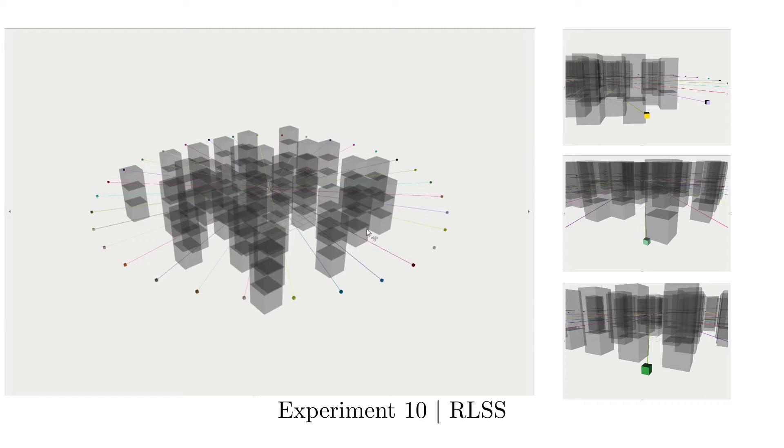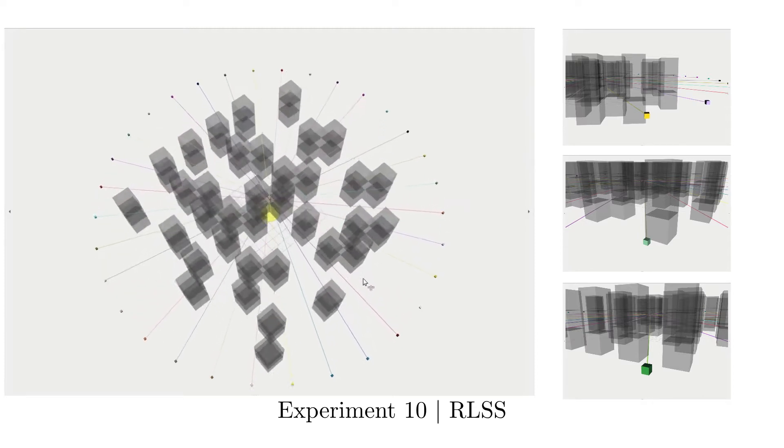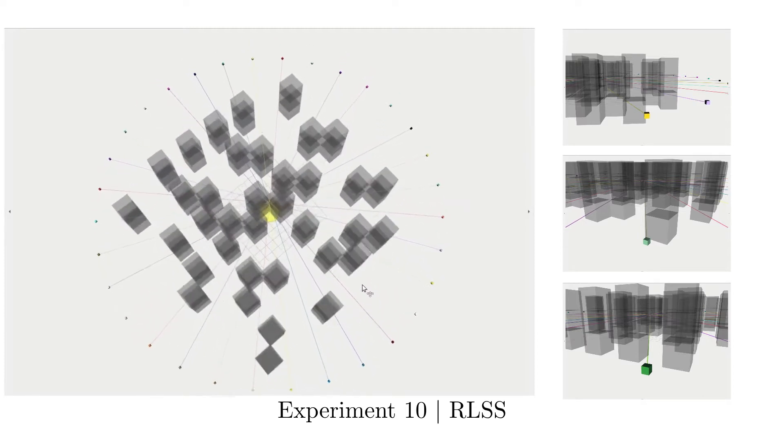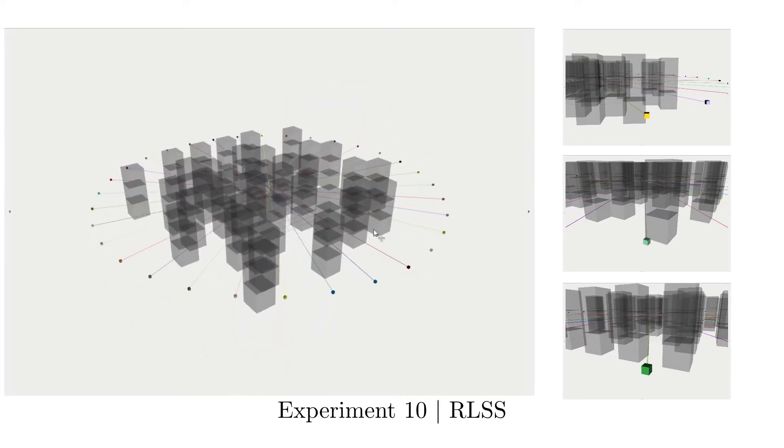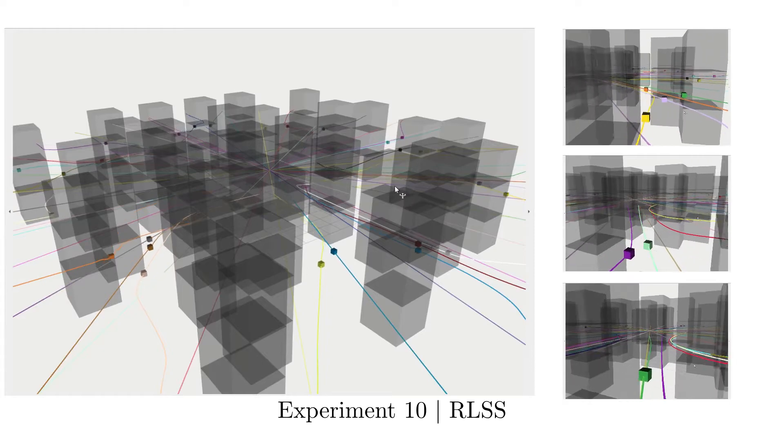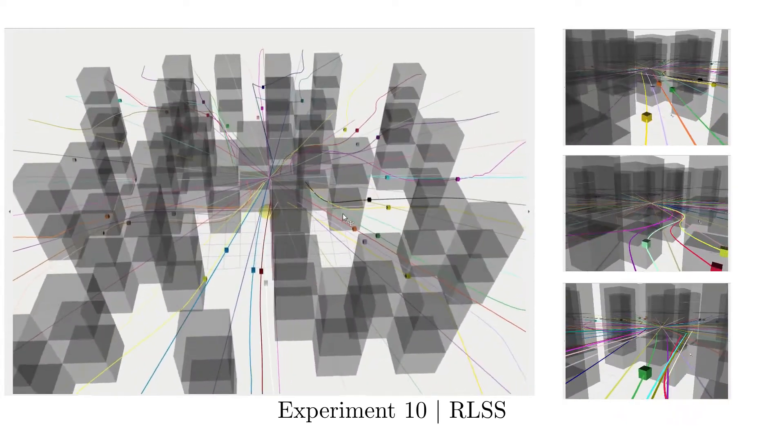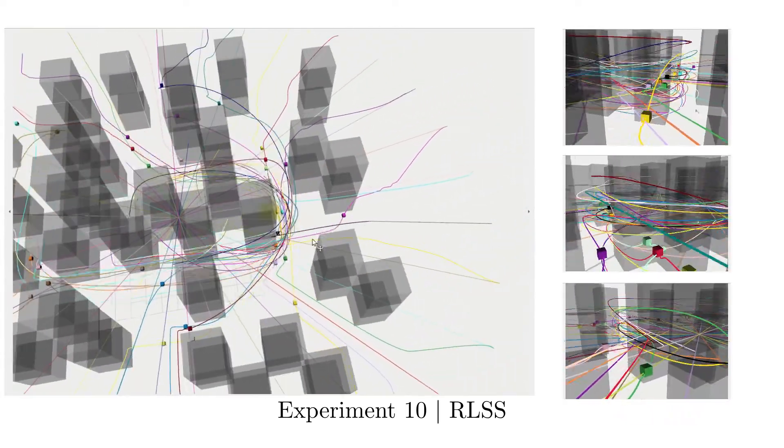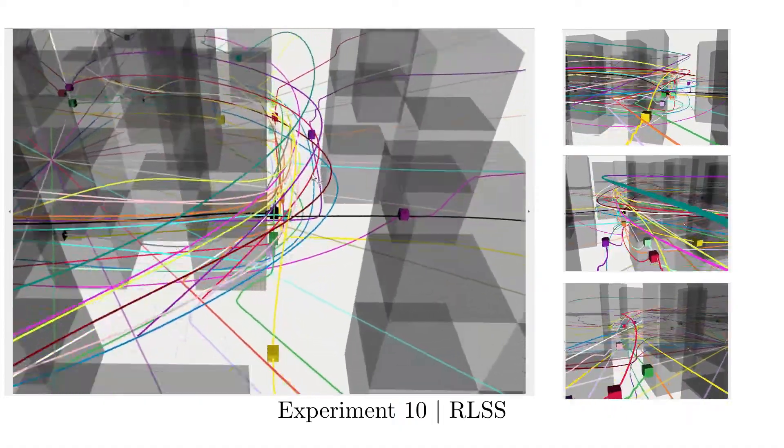In this experiment, 32 robots are arranged in a circular formation as before in a maze-like environment. The task is to swap robots at the antipodal points of the circle. In this experiment, desired trajectories are set to straight-line segments connecting robot start positions to robot goal positions.